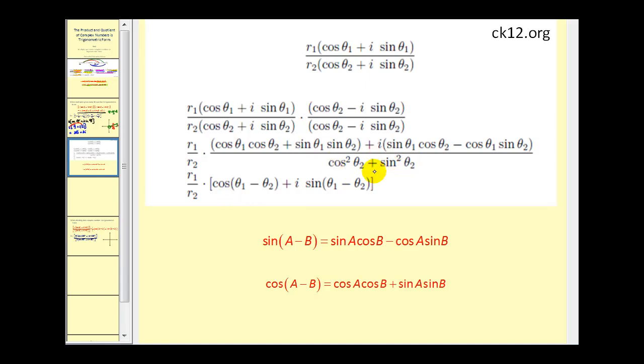When we do that, notice the denominator becomes cosine squared θ₂ plus sine squared θ₂. Remember that's equal to one, so that eliminates the fraction. And then the numerator, what we can do is use the difference identities for sine and cosine to come up with our final formula. So if we're finding the quotient of two complex numbers in trig form, we just divide the r's and then find the cosine of the difference of the angles and the sine of the difference of the angles.